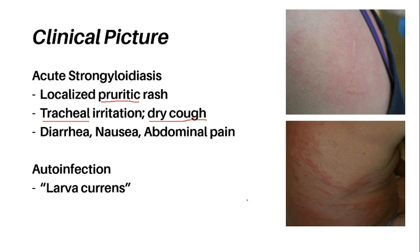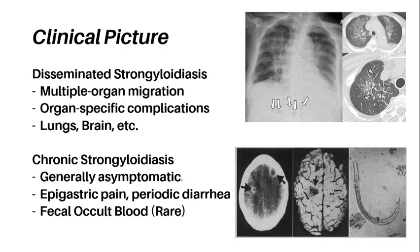The subcutaneous migration of filariform larvae in the auto-infective cycle causes a condition called larva currens, presenting as an urticarial rash along the buttocks, thighs, and perineum. The disseminated type of strongyloidiasis occurs when the larvae invade numerous organs, causing complications including respiratory complications in the lungs, neurologic complications in the brain, and sometimes due to excessive migration, the larvae may carry gram-negative bacteria, causing bacterial sepsis.